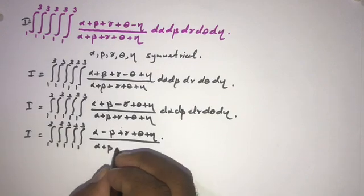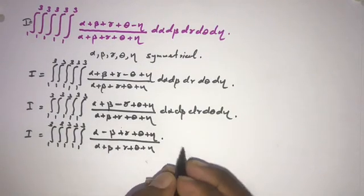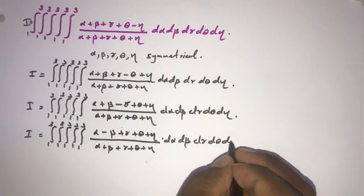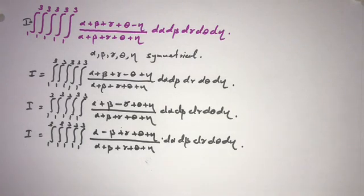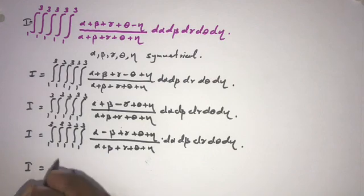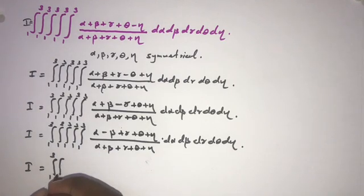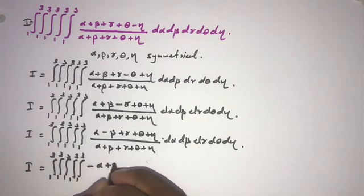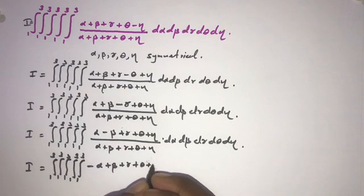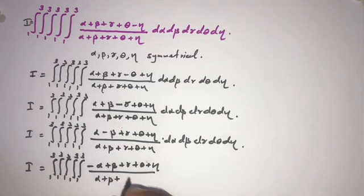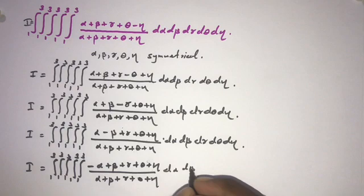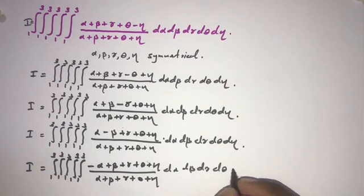Also, by symmetry of the variables, we can write I as the integral from 1 to 3 (five times) of (alpha minus beta plus gamma plus theta plus eta) over (alpha plus beta plus gamma plus theta plus eta), d alpha d beta d gamma d theta d eta. And one more: (minus alpha plus beta plus gamma plus theta plus eta) over (alpha plus beta plus gamma plus theta plus eta), d alpha d beta d gamma d theta d eta.